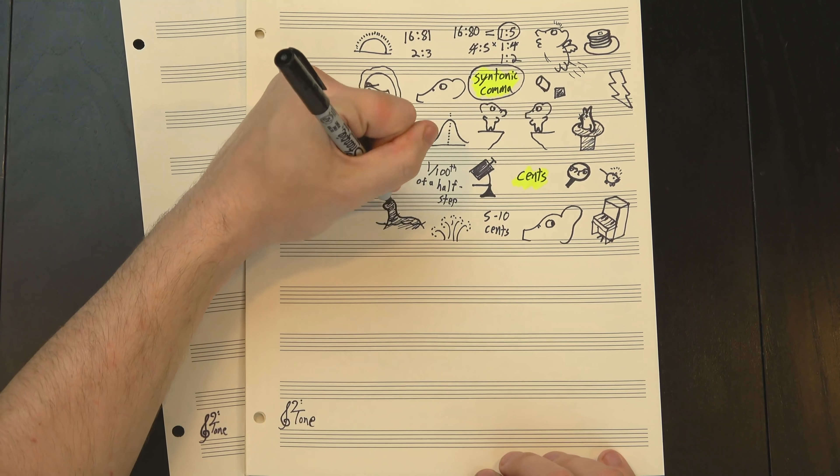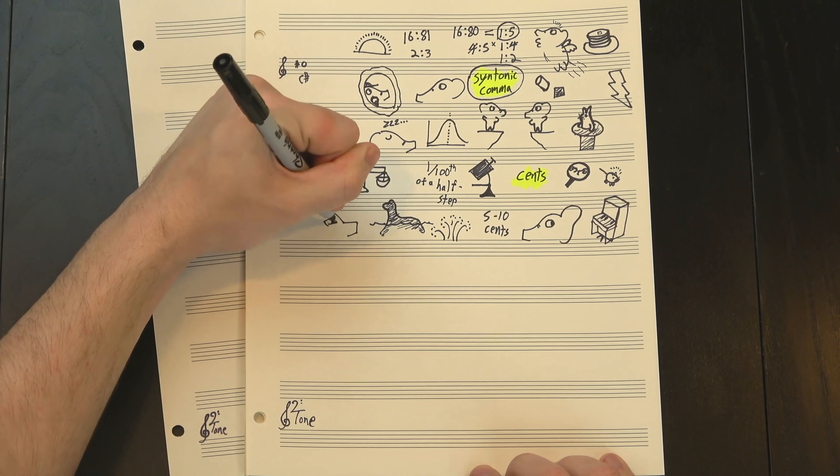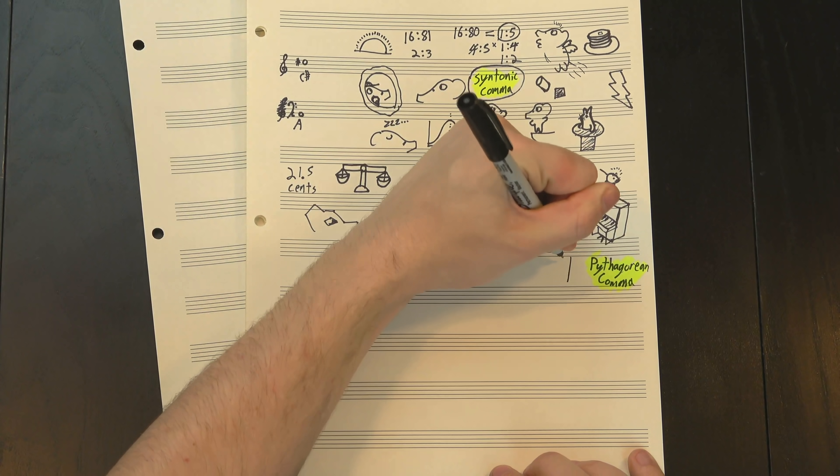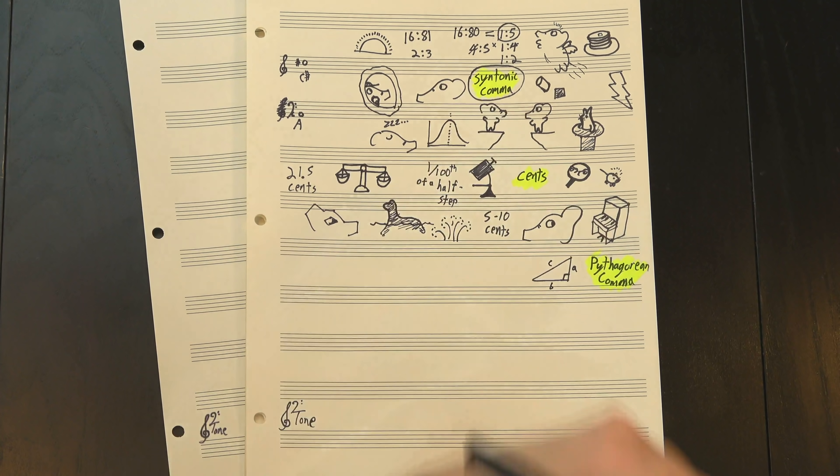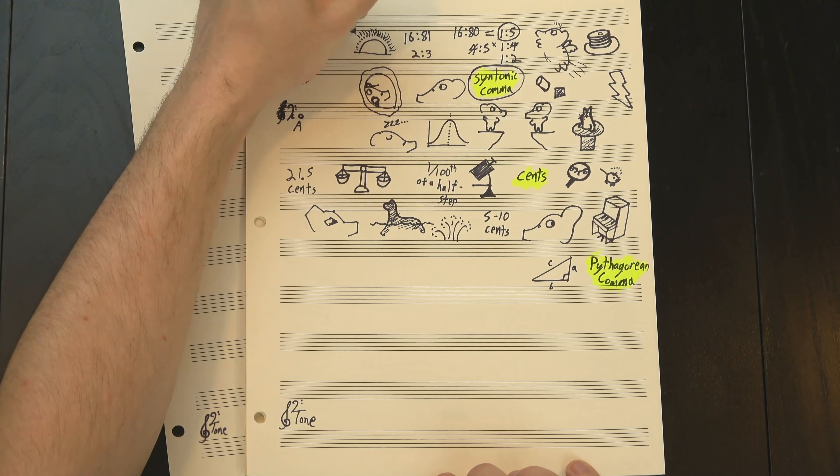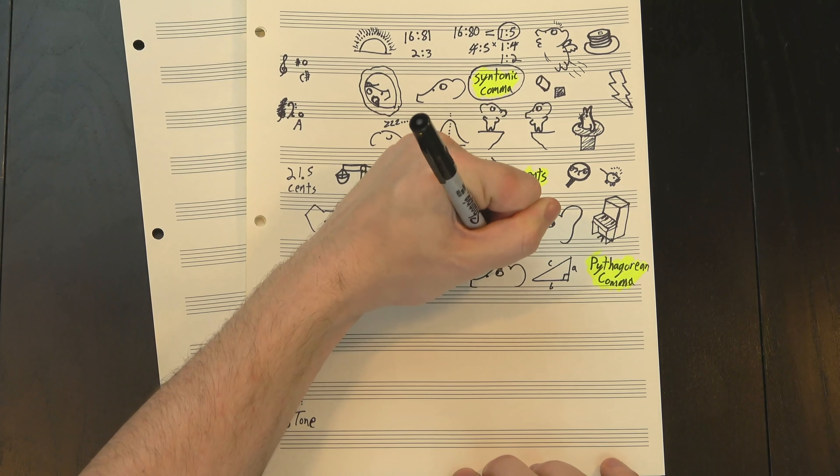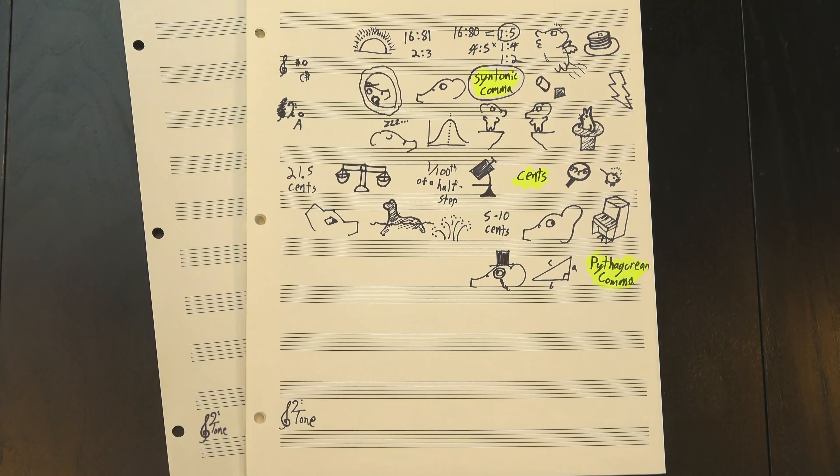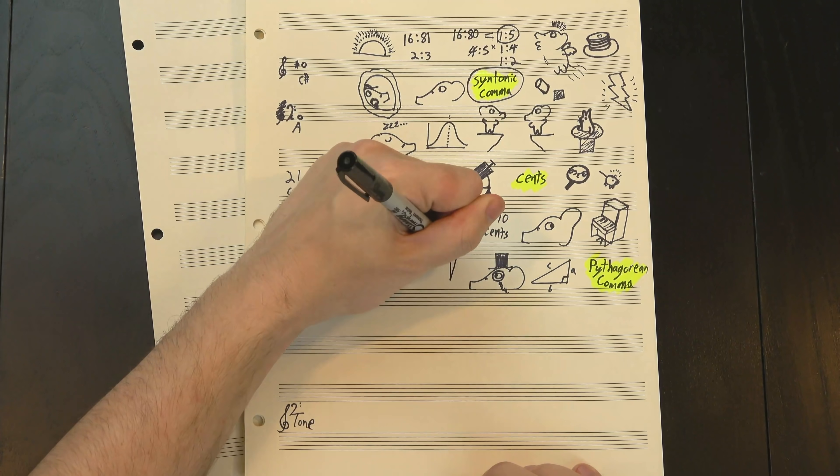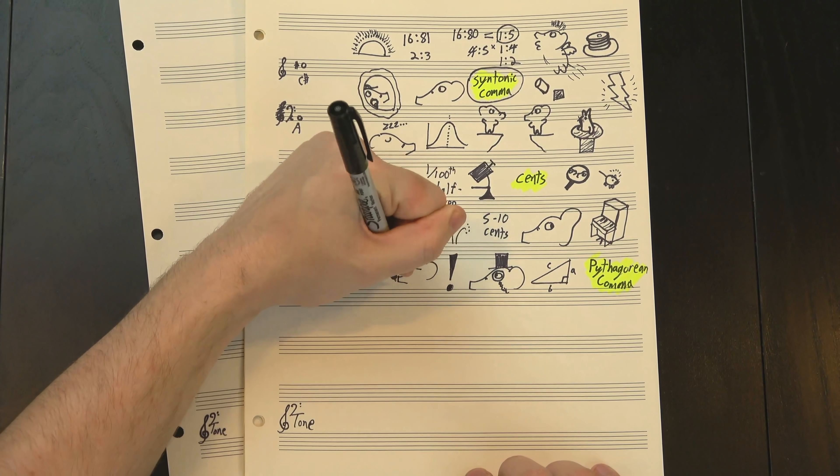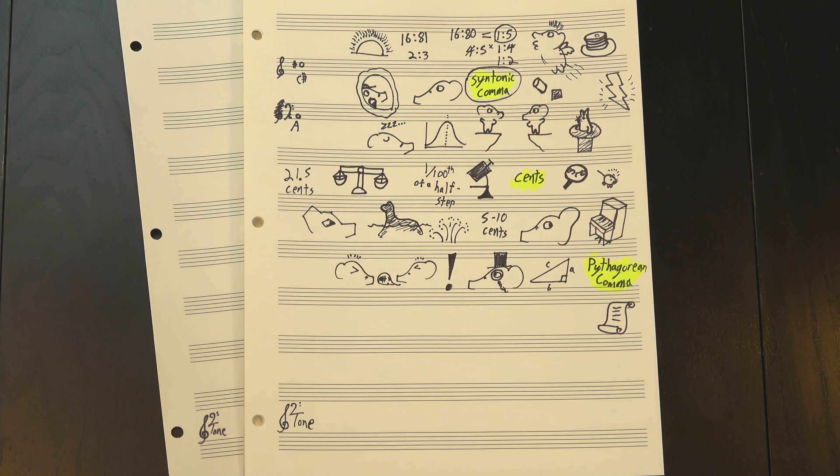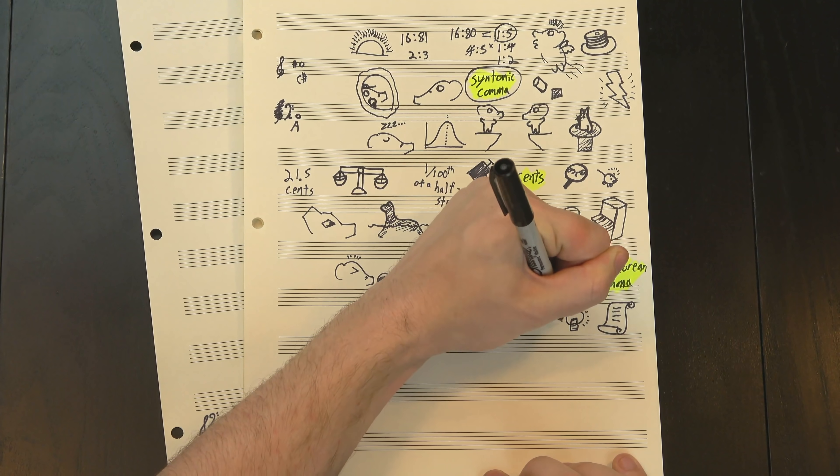The syntonic comma isn't the only comma out there though. It's not even the simplest. That title probably belongs to the Pythagorean comma, named after the Greek mathematician Pythagoras of triangle fame. The syntonic comma relies on the inclusion of the just intonation major third, but Pythagoras wasn't interested in fancy-schmancy intervals like that. No, his problems required only the octave and the perfect fifth. I've mentioned before that it's fairly easy to prove that these intervals don't play nice together, but I've never actually proved it, so I figured now's as good a time as any to do that.